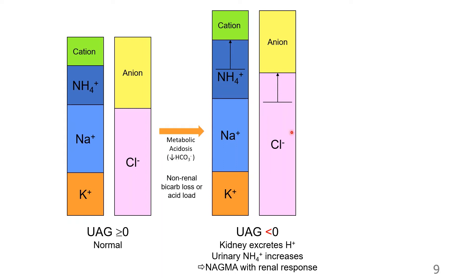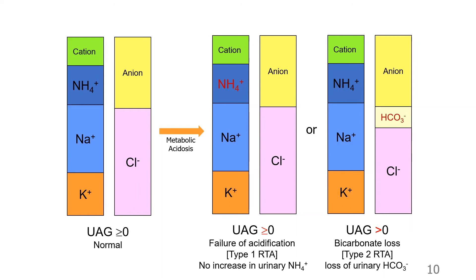The urine anion gap is less than zero because urine chloride must increase to match the extra cationic charge from ammonium. In the presence of metabolic acidosis where kidneys are not responding appropriately, there is no change in the urine anion gap — it remains above or at zero — suggesting failure of acidification as in Type 1 RTA, with no increase in urinary ammonium. Alternatively, it could be due to bicarbonate loss, which would be Type 2 RTA, where bicarbonate appears in the urine and the urine anion gap is more than zero.